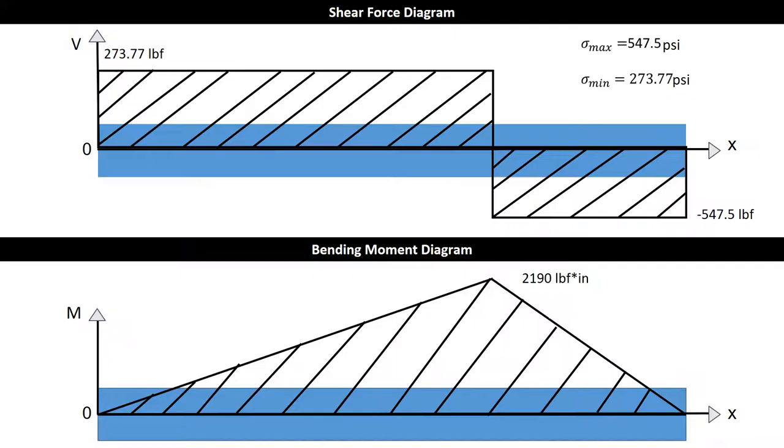Here we have the shear force diagram and the bending moment diagram, both obtained from the free body diagram from the previous slide. From the shear force diagram, we obtain our maximum and minimum stresses. The maximum stress from the highest point in our diagram is 547.5 psi, and the minimum stress from our lowest point in the shear force diagram is equal to 273.77 psi.